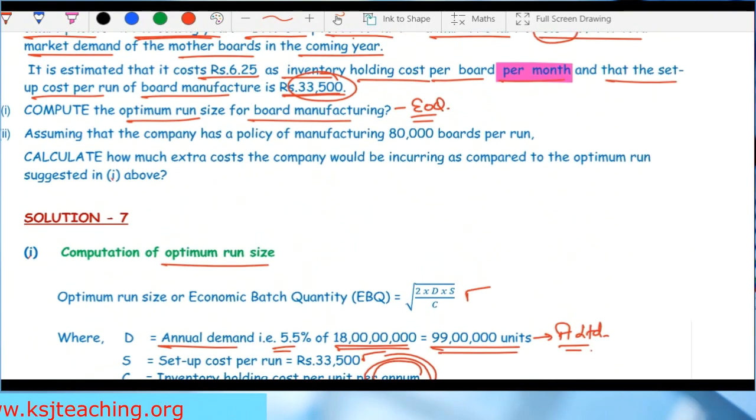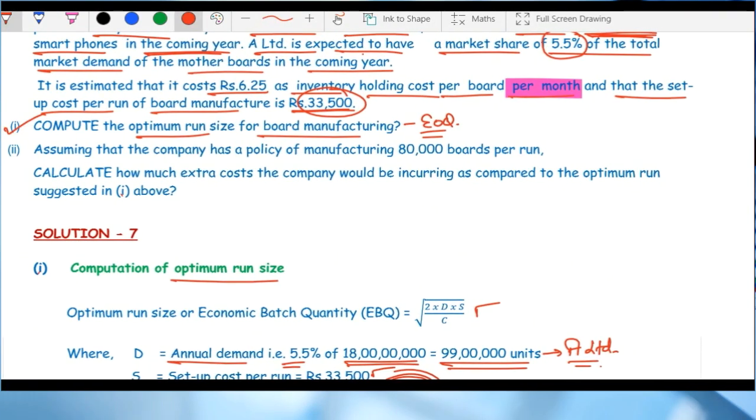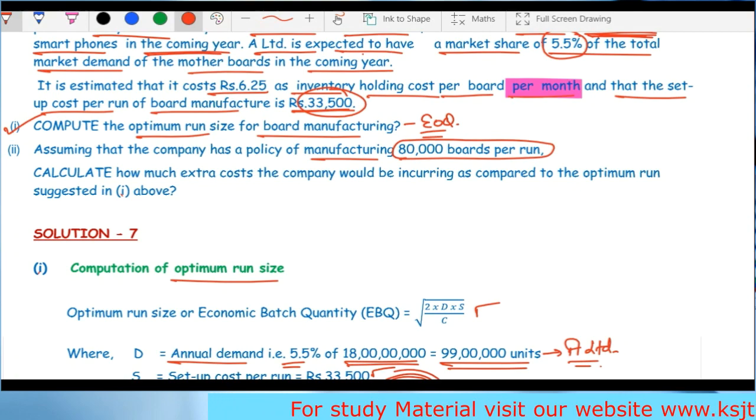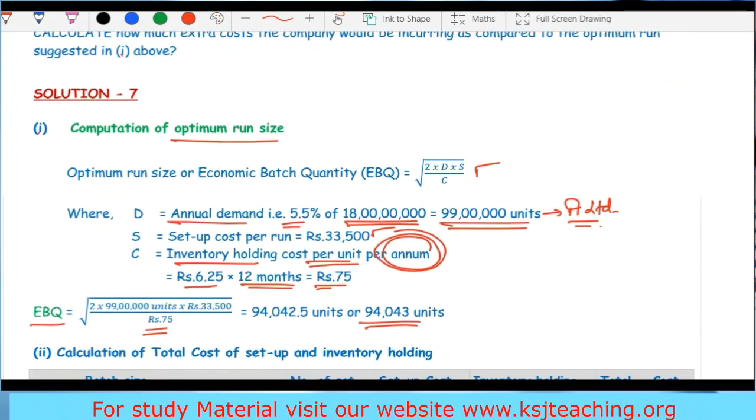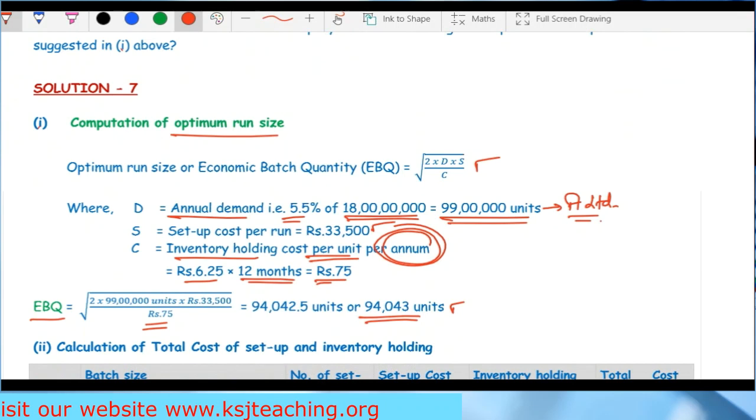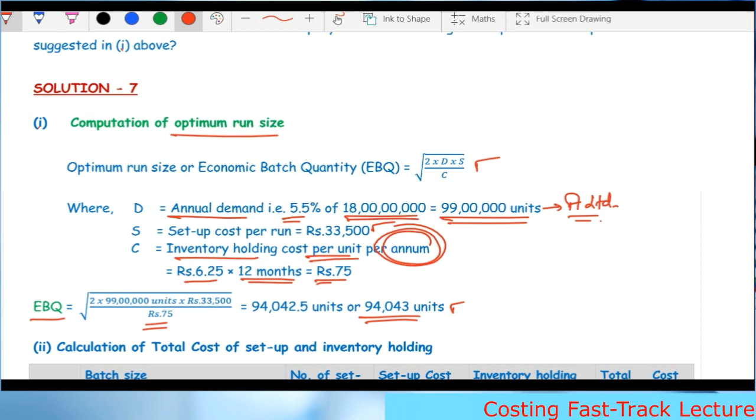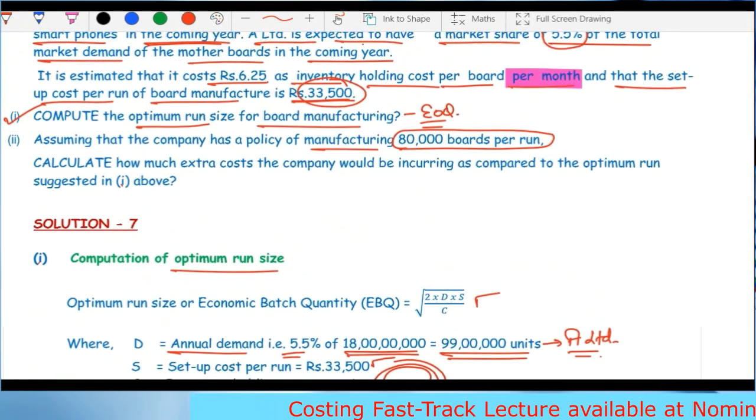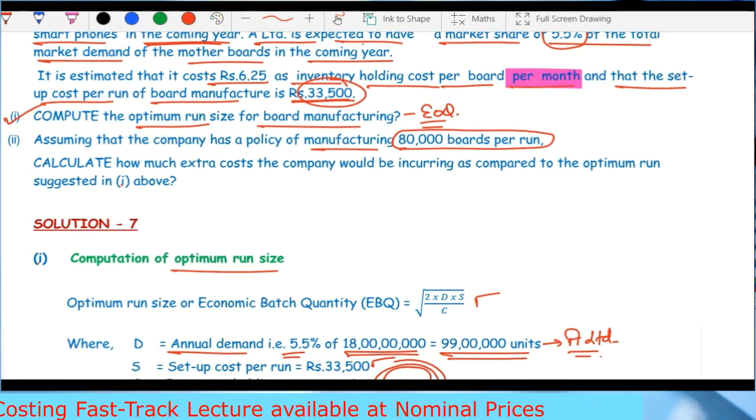Second part assumes the company has a policy of manufacturing 80,000 boards per run. The company says they won't manufacture EBQ units. We identified that one batch should be 94,000 units, but the company will work according to their own policy - one batch of 80,000 boards.